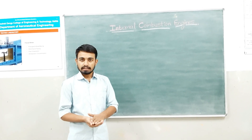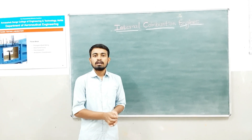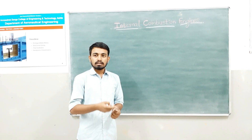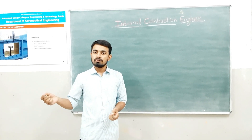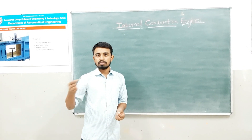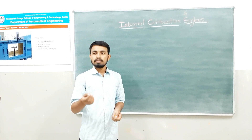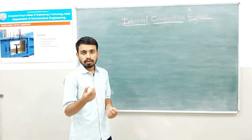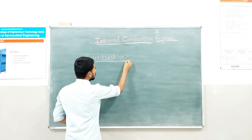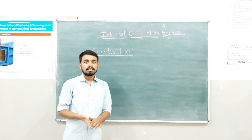Engines are basically of two types: one is an internal combustion engine and another is an external combustion engine. Examples of internal combustion engines are petrol engines and diesel engines, which we use in our day-to-day life in cars and other vehicles. For external combustion engines, the example is the steam engine.